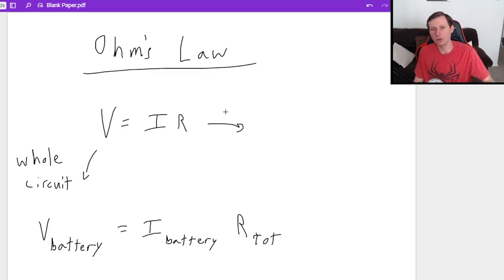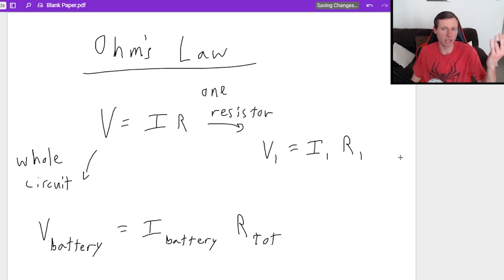Alternatively, you can just do it for one resistor. You can do Ohm's law for one resistor as well. Let's say you want to do it for resistor R1. Then the voltage across resistor 1 is equal to the current across resistor 1 times the value of resistor 1, 20 Ohms, let's say, hypothetically. And of course, you can do this with V2 equals I2 times R2. You can do it with as many resistors as you have.